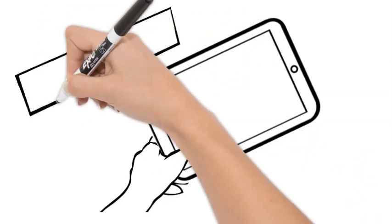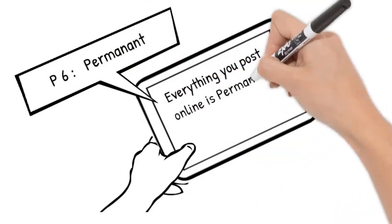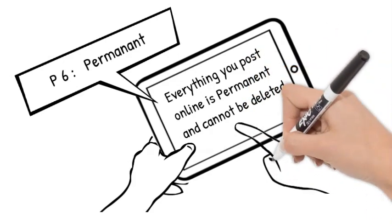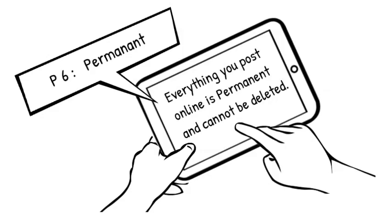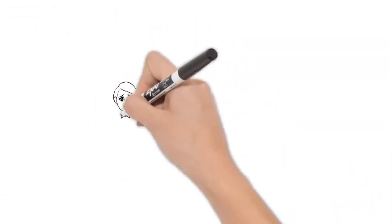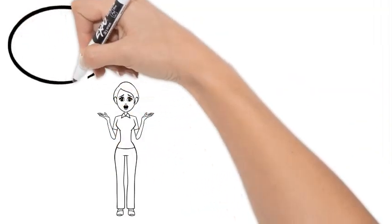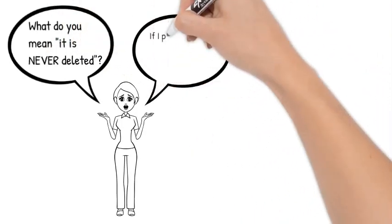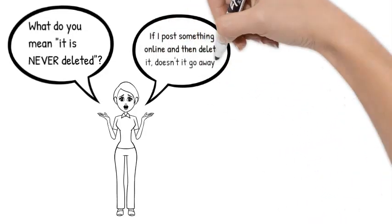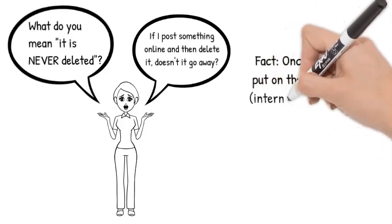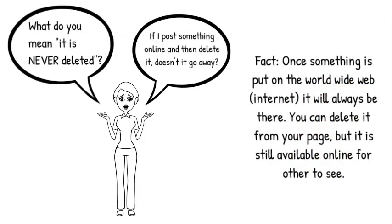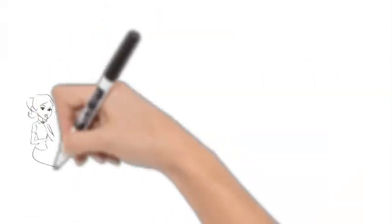The next P is permanence. Everything you post online is permanent and cannot be deleted. I know you're thinking, what do you mean permanent? If I post something online and then delete it, doesn't it go away? Not at all. Once something is put on the world wide web, the internet, it will always be there. You can delete it from your page, but it is still available online for others to see.